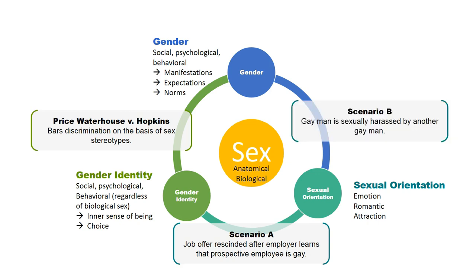In another scenario where a gay man is sexually harassed by another gay man, the question is whether that is covered under Title VII on sex-based discrimination or harassment. The answer is yes, because the law protects against sexual harassment regardless of gender — it could be harassment between opposite-sex or same-sex individuals.